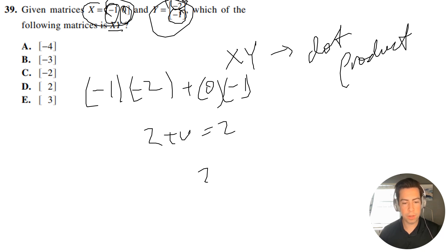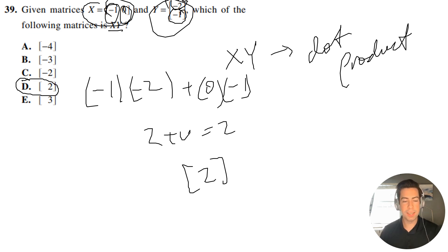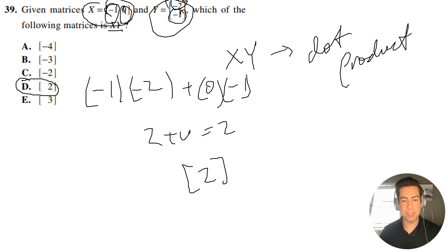So the way you write it in matrix form is just going to put it in those brackets like that, and that is going to be your answer. The answer is going to be D. If you have any questions, feel free to comment below and I'll see you in the next video.